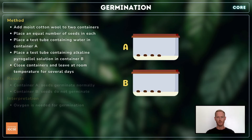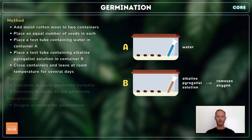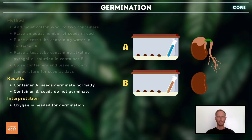To investigate the effect of oxygen, add moist cotton wool to two containers and place an equal number of seeds in each. Place a test tube filled with water in container A and one containing alkaline pyrogallol solution in container B. Alkaline pyrogallol absorbs oxygen, creating a low oxygen environment. Cover the containers and leave at room temperature for several days. The seeds in container A will germinate normally, but there will be little or no germination in container B.